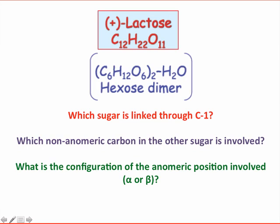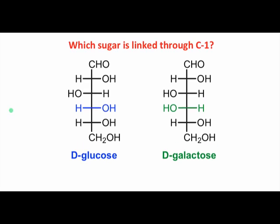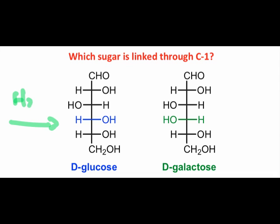In the last webcast, we identified three key questions that we'll have to address to fully specify the structure of lactose. First of all, we need to determine which sugar, glucose or galactose, is connected through its anomeric hydroxyl group. Recall that the fact that the disaccharide was cleaved under acidic hydrolysis conditions implies that at least one anomeric hydroxyl group must be involved in the glycosidic linkage.